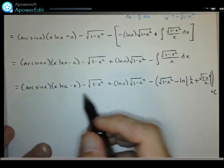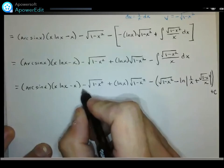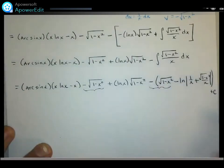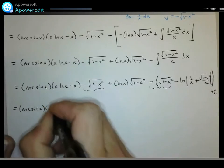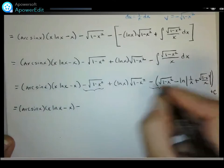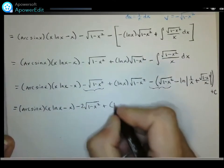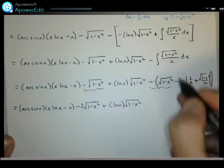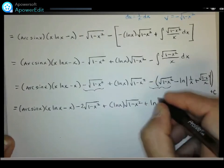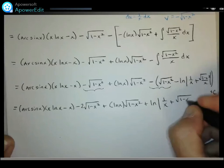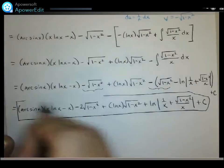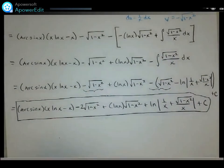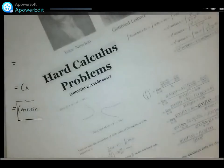Putting everything together and distributing the negative sign to clean up, the final answer to the original integral is: arcsin(x)·(x·ln(x) − x) − 2√(1 − x²) + ln(x)·√(1 − x²) + ln|1/x + √(1 − x²)/x| + C. If you type the original integral into Wolfram Alpha you'll see similar terms. This has been episode one of 'Hard Calculus Problems Sometimes Made Easy.'